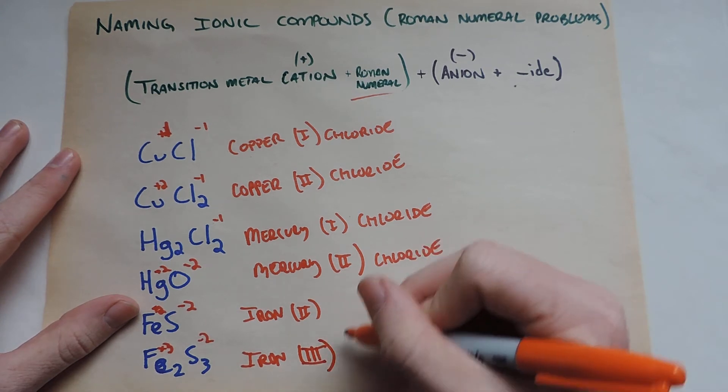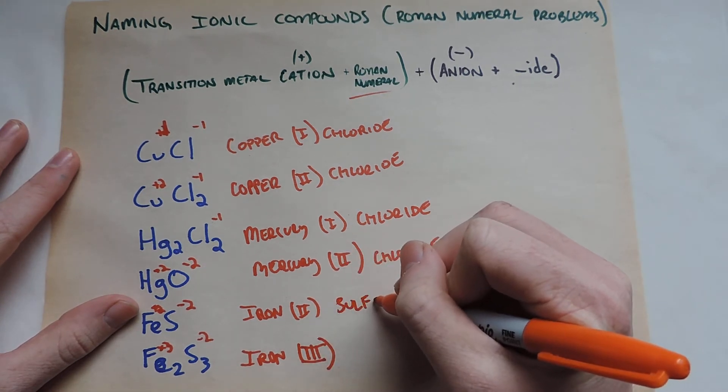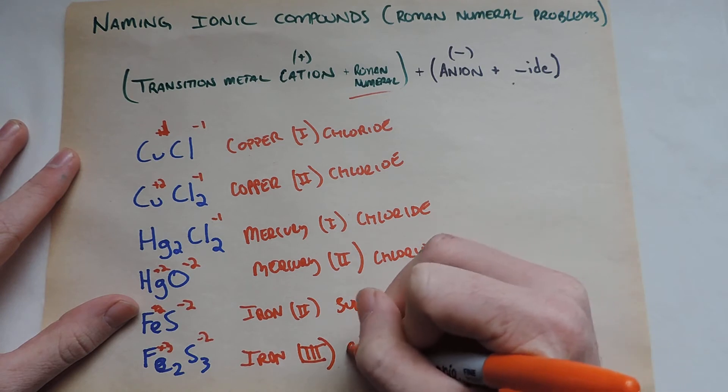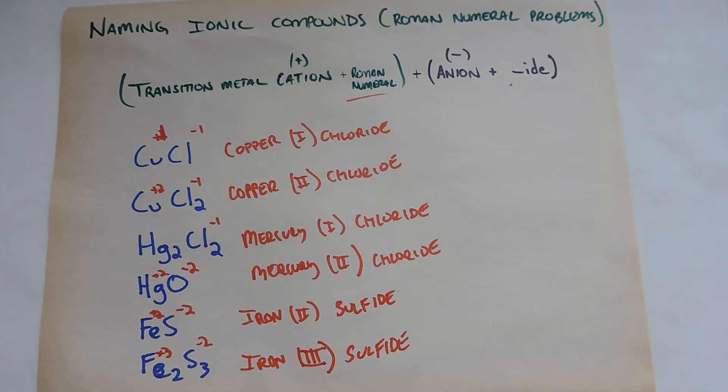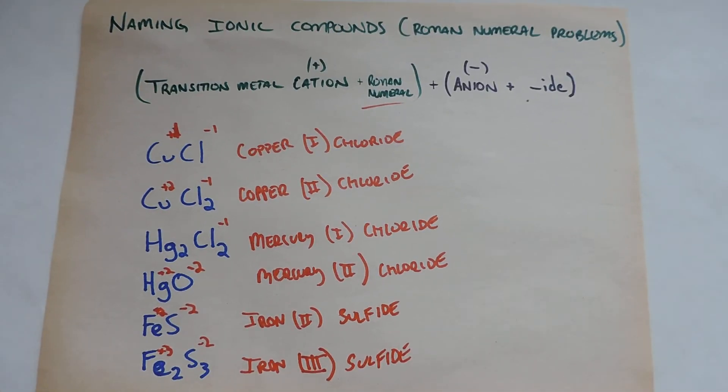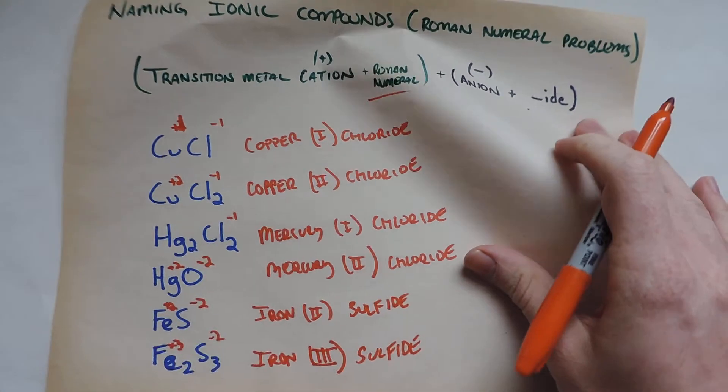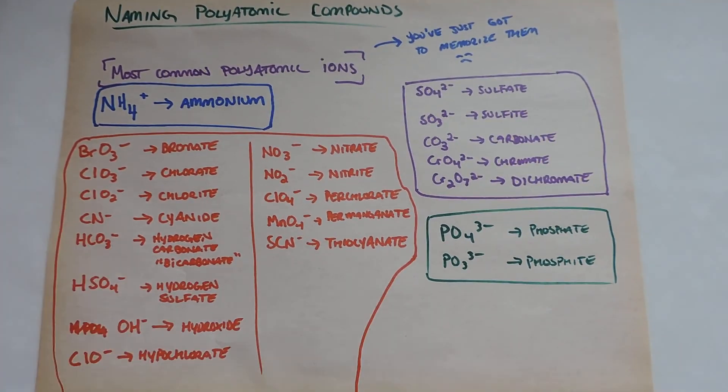So this is going to be iron three sulfide. And so this is easy. This is the first two pages we've looked at are the easy stuff. Where it gets harder, it really, honestly, it just takes memorization.